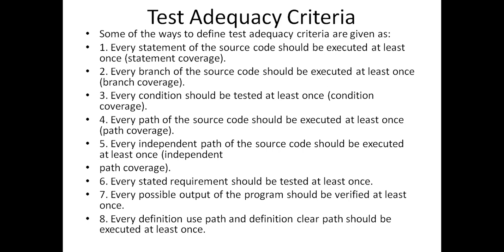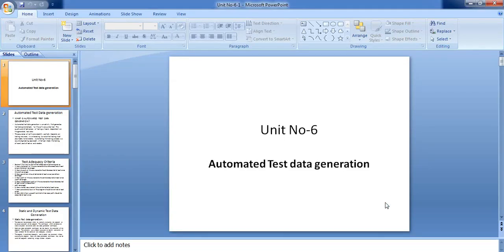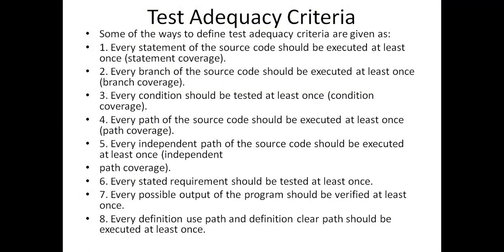One of the test data adequacy criteria states that every segment of the source code should be executed at least once. Every branch of the source code should be executed at least once. Every possible output of the program should be verified. Every definition in a clear path should be executed. Meaning, whatever we write in our source code document, we need to execute it at least once — every statement mentioned in our source code.